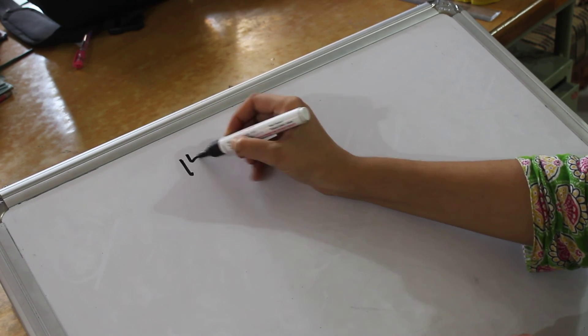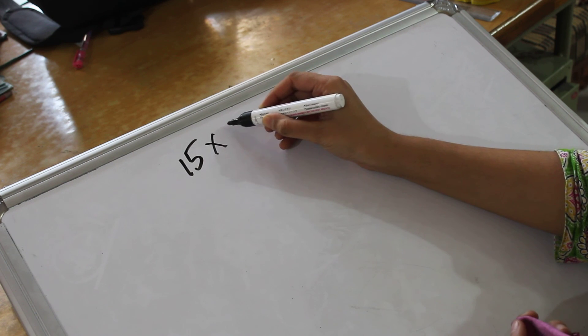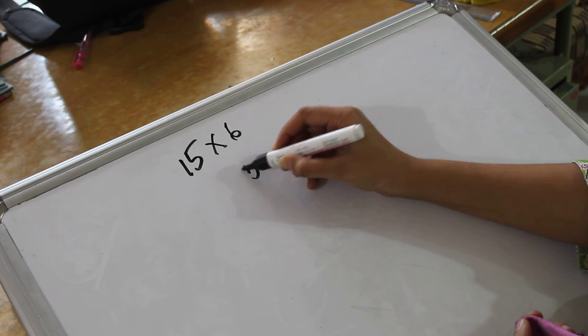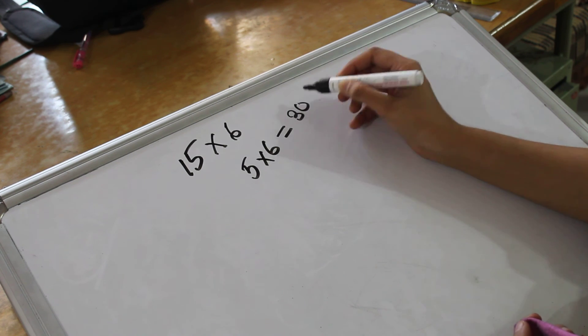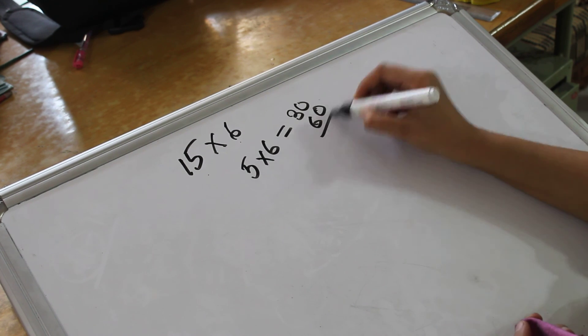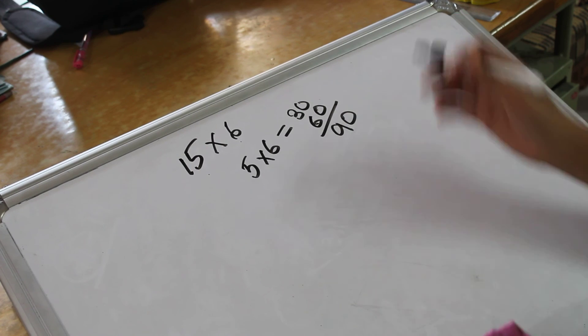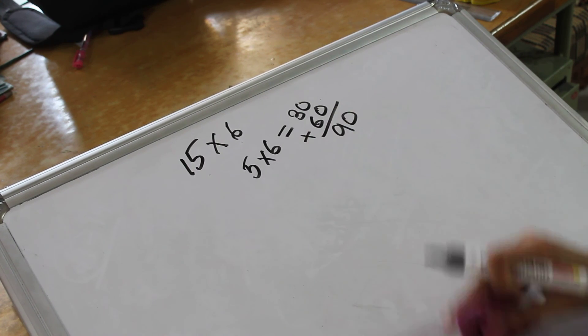Now 15 table. 15 into let's say 6. 5 into 6 is 30. 60. That would be 90. And that's right. So you have to plus this value.